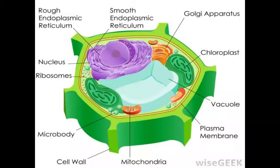Ethylene is a compound of carbon and hydrogen with the chemical formula C2H4. It is a colorless gas with a sweet odor that is manufactured on a huge scale by the petrochemical industry for use mainly in the production of plastics.